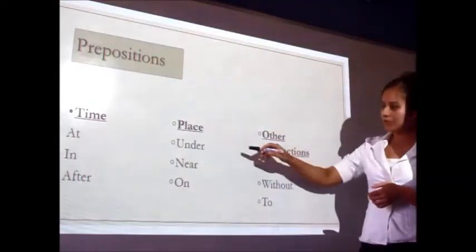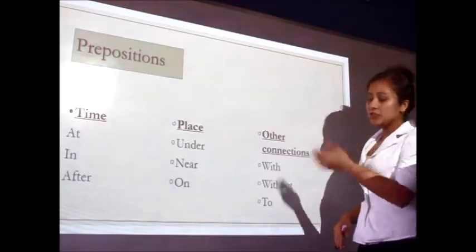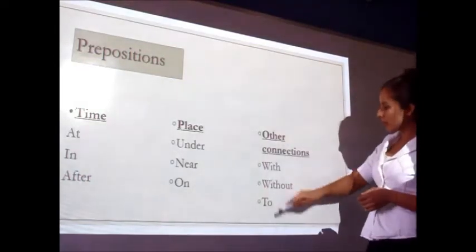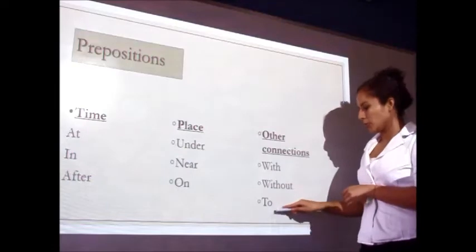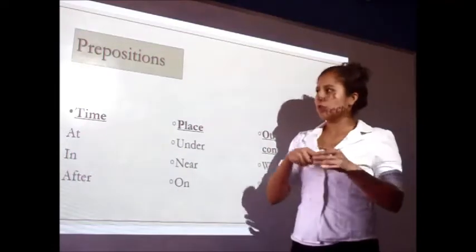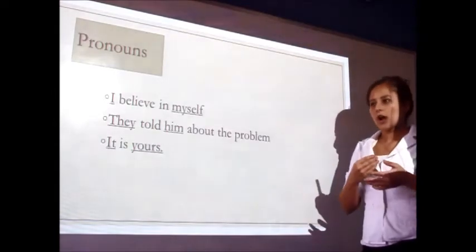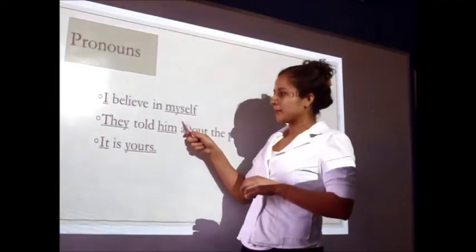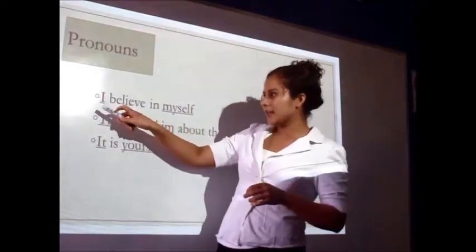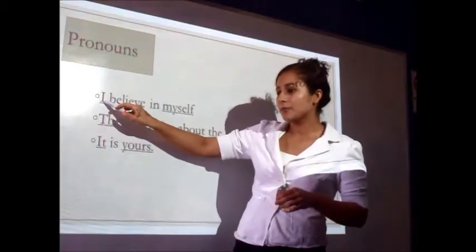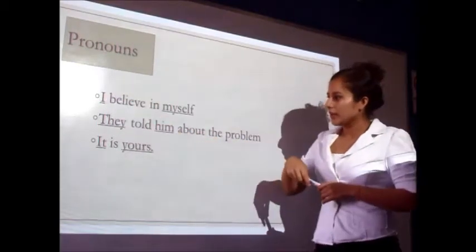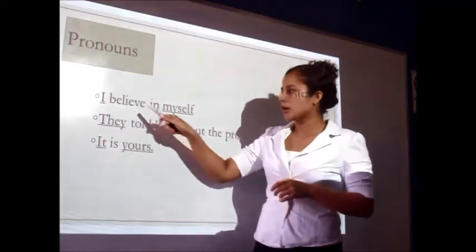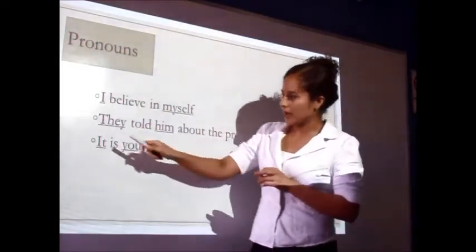Prepositions for place include: under the table, on the table, and near the house. Pronouns are used in place of nouns. For example, 'I believe in myself' — here 'I' replaces a noun. Another example: 'They told him about the problem' — the underlined words are the pronouns.